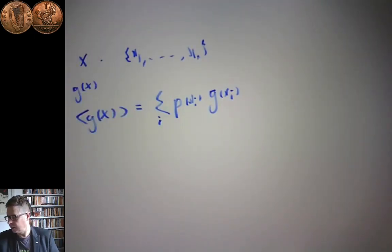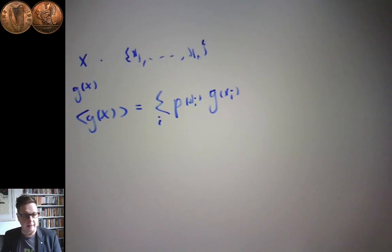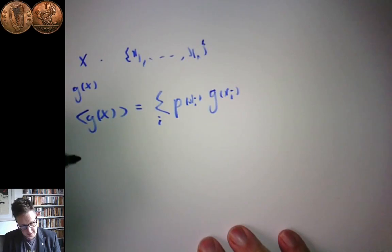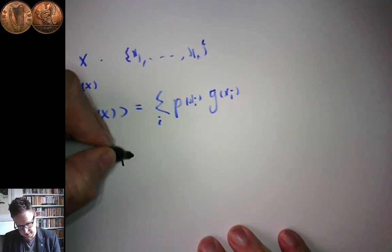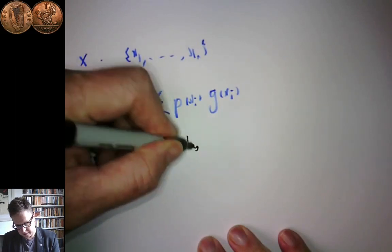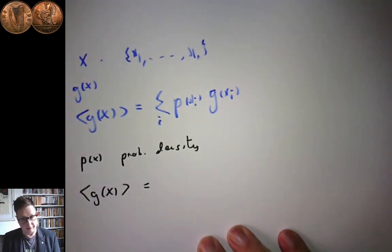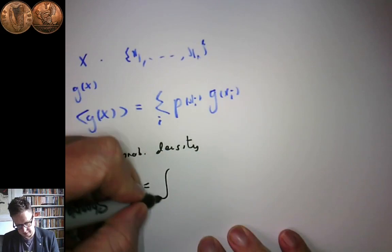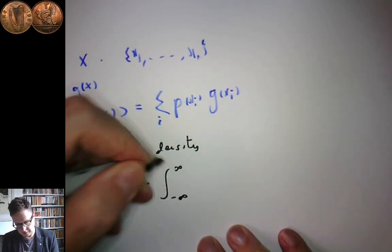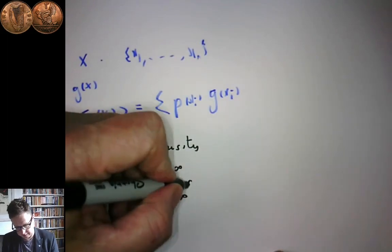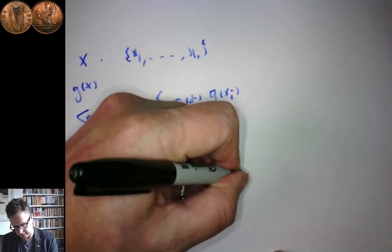What we want to do now is write down an analogous formula for the continuous distribution. Say the continuous distribution has probability density p of x. Then the expected value is defined in the obvious way by turning the sum into an integral — the integral from minus infinity to infinity of g(x) times p(x) dx. This might be curtailed if the support is compact.